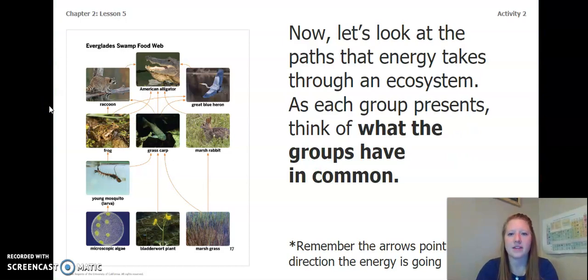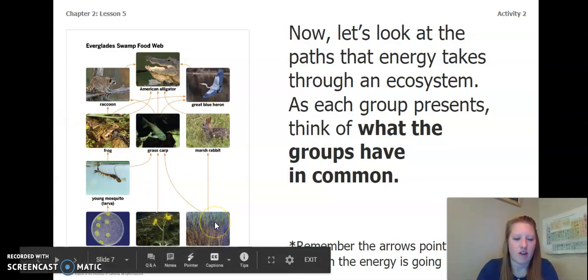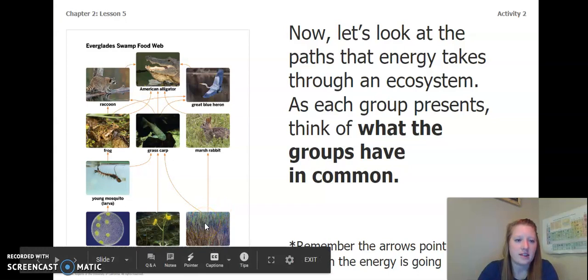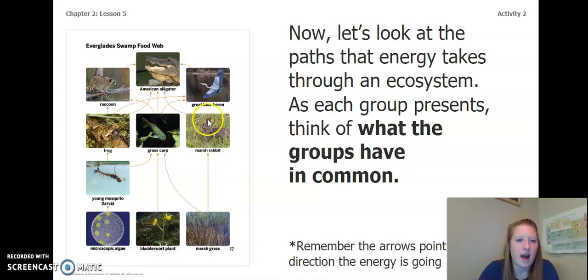Now let's look at the paths that energy takes through an ecosystem. As each group presents, think of what the groups have in common. So let's start at marsh grass. This is our plant. And remember, the arrows point to the direction the energy is going. So the energy from the marsh grass goes up to the rabbit. The energy from the marsh rabbit then goes into the American alligator.